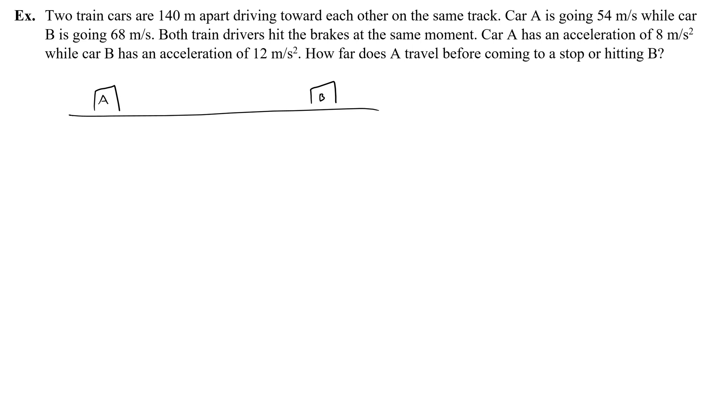A, B. Initially, they are 140 meters apart. I can mark this a couple of ways. I can say that car A is at 0 and B is at positive 140, or B is at 0 and A is at negative 140. I'm going to choose to write that A is at 0. To do that, I'm going to say xA0, the initial position of A, is 0. And that makes the initial position of B, xB0, 140.